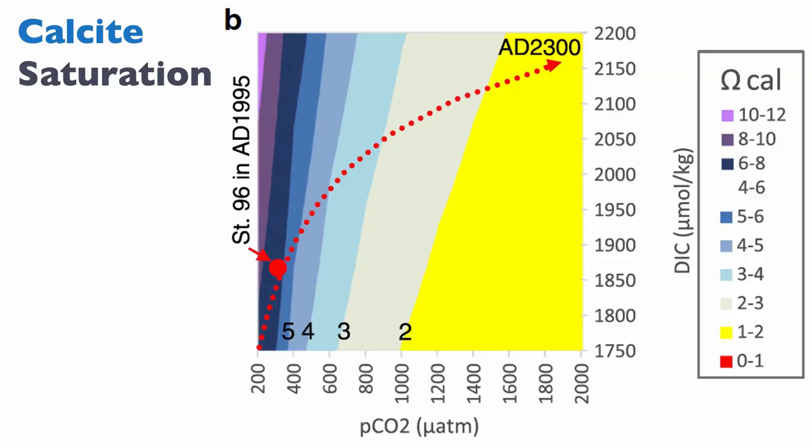We know from the first class that the more CO2 you have in the atmosphere, the more CO2 will dissolve in the ocean and create carbonic acid, lowering the pH and making precipitation of carbonate harder. We also see that for any given partial pressure of CO2, the lower the DIC — the dissolved inorganic pool of the ocean — the lower the saturation state of the ocean will become.